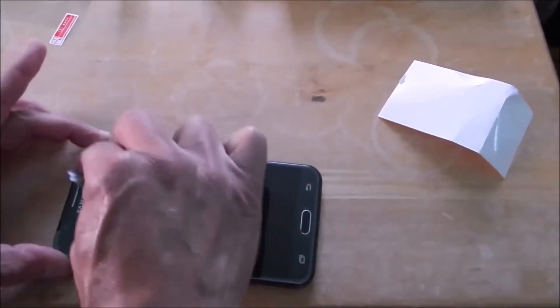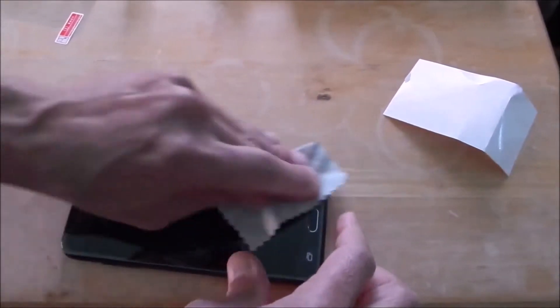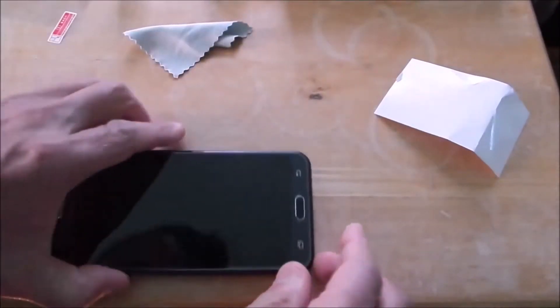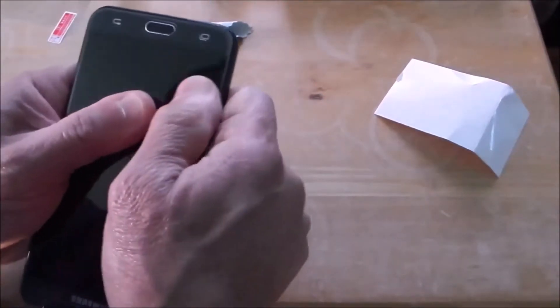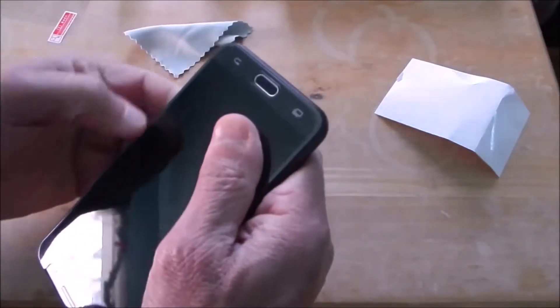If you let them install the tempered glass at wherever you're buying the phone, at the phone store, I wouldn't trust them because they're just doing it too fast. And sometimes it won't be centered and when they put the case on, it will crimp down on the edges of the tempered glass and actually your touch screen won't work very well.